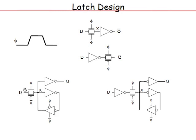When the latch is transparent, D is connected to x and you want to disconnect the feedback — otherwise the two will fight each other. When opaque, you connect the feedback so x gets complemented and stored statically, overcoming any leakage issues. You do not have to worry about leakage in a static latch; it is volatile but will maintain information as long as power is present.